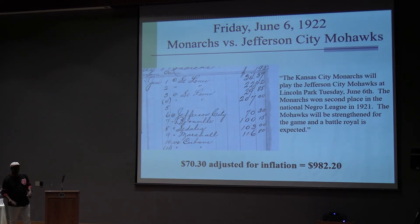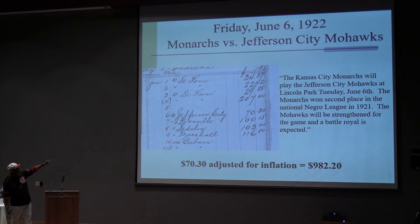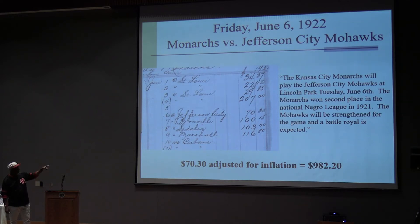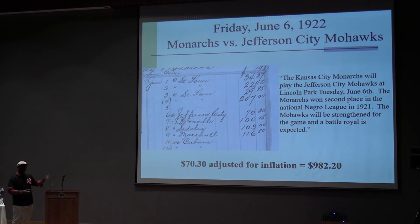People say, why would they come to Jefferson City? Well, if you notice, they played the St. Louis Stars, and the Monarchs' take for that league game was $29. And if they came to Jefferson City, they made $70. Wouldn't you come back to Jefferson City? That was a league team and they made $29. St. Louis must have been an awfully tough place to play.